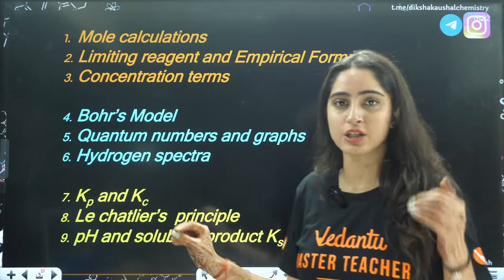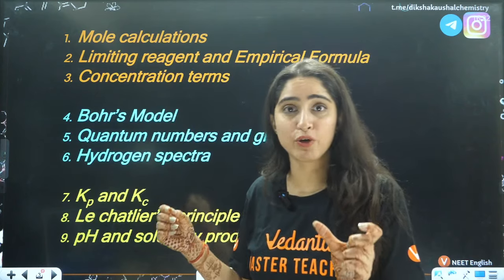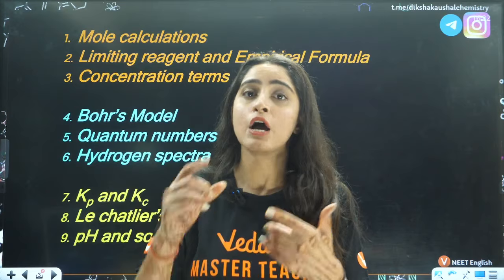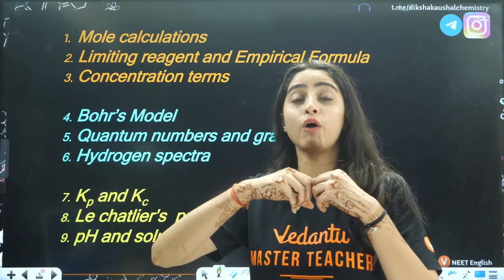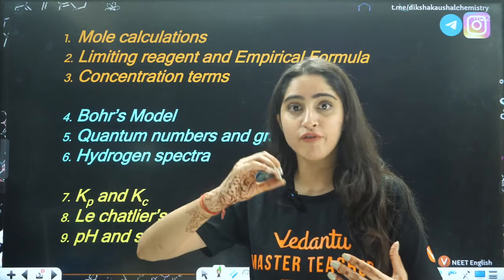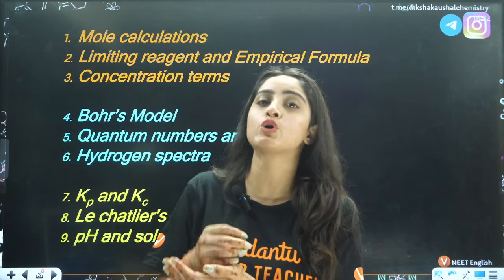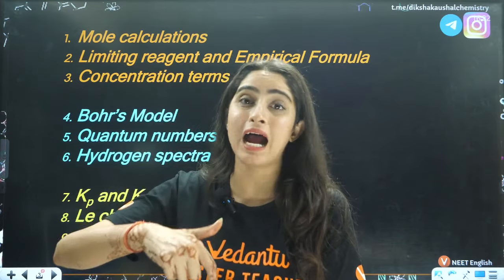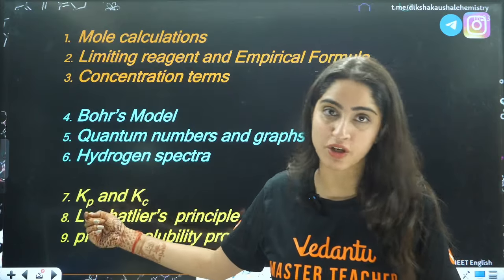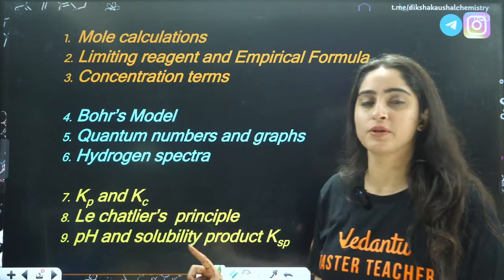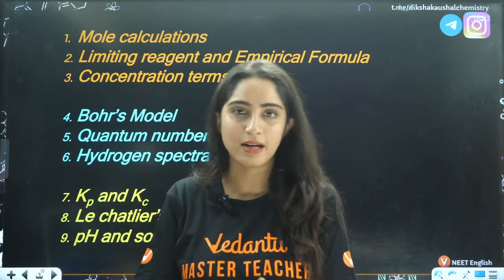Next is Kp and Kc from equilibrium — specifically chemical equilibrium. You need to know the law of mass action, the relation between Kp and Kc, how to calculate values given concentrations or degree of dissociation, and Kp in terms of pressure as well. Next is Le Chatelier's Principle, where direct questions are asked on temperature and pressure dependence.